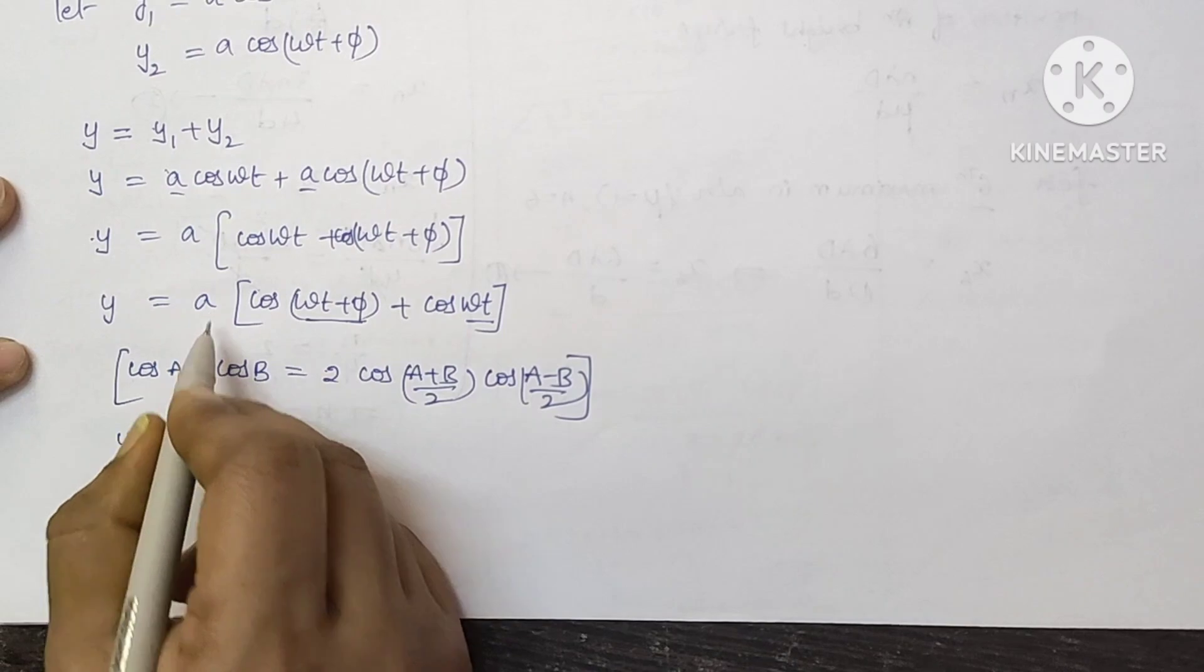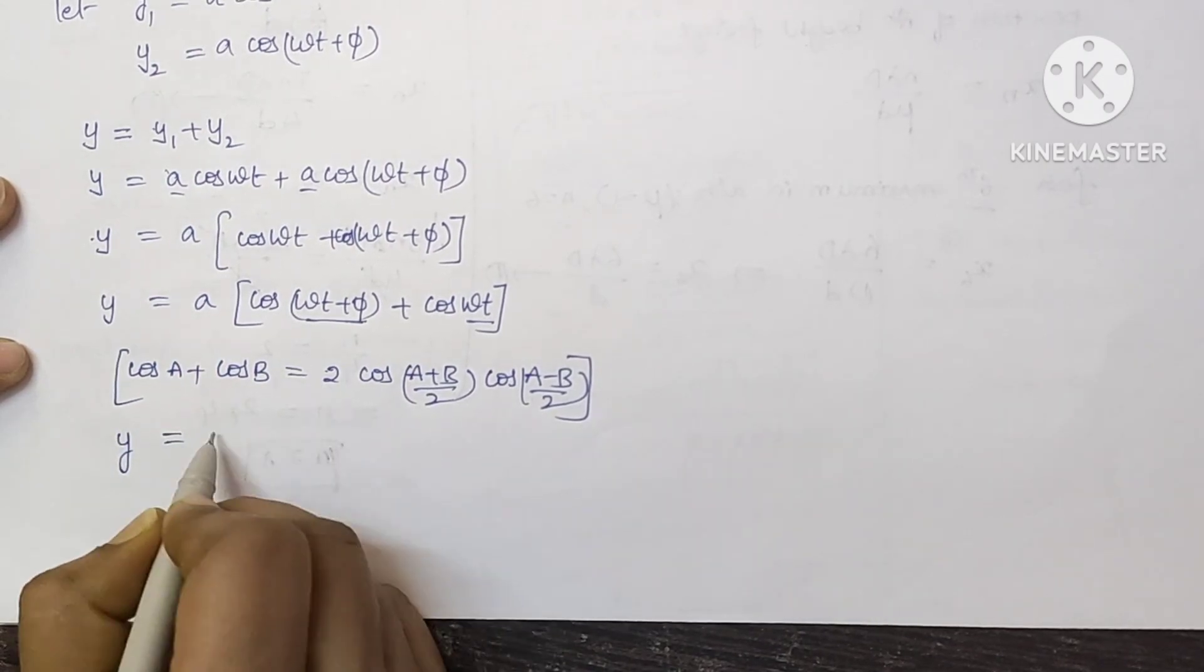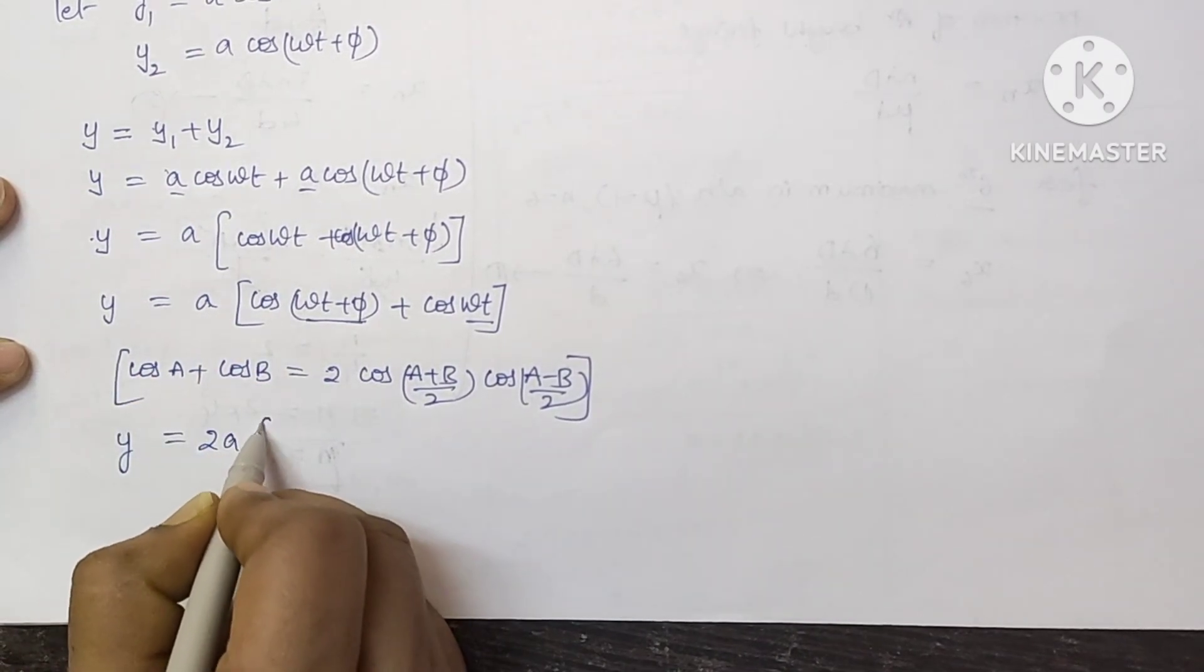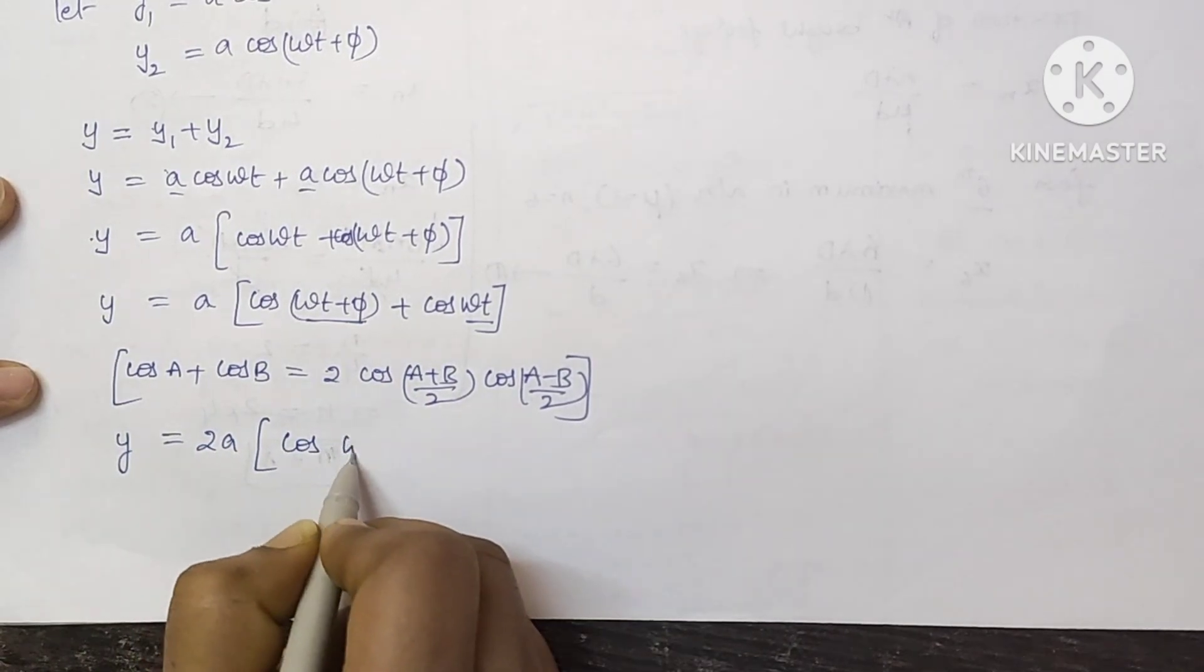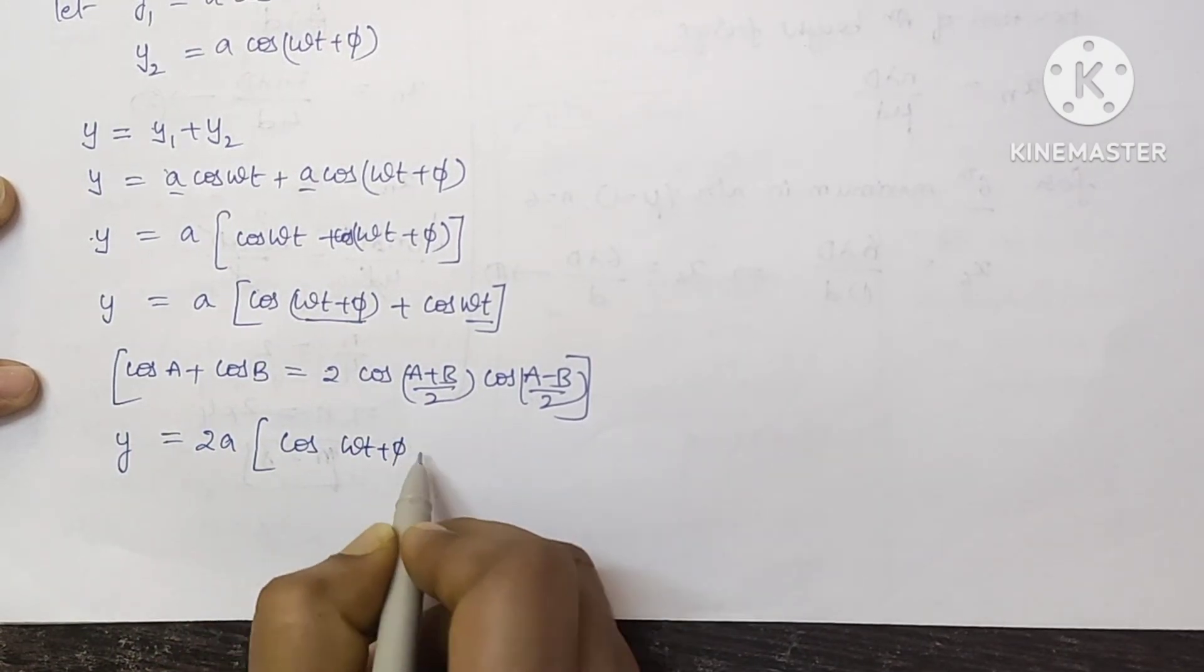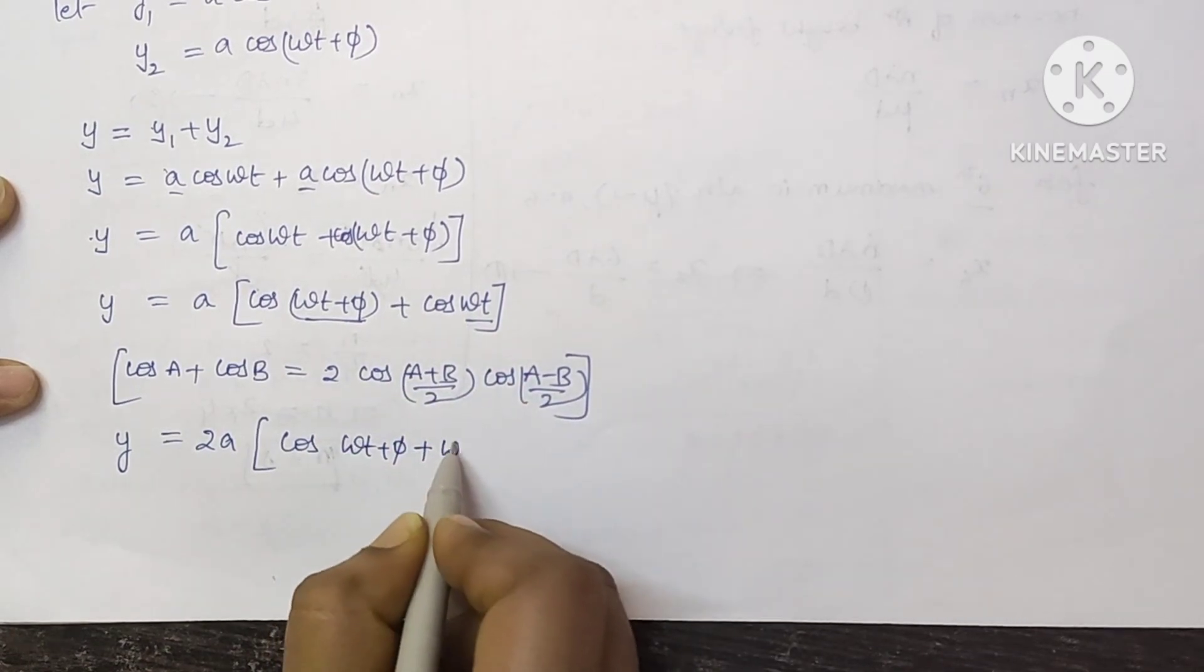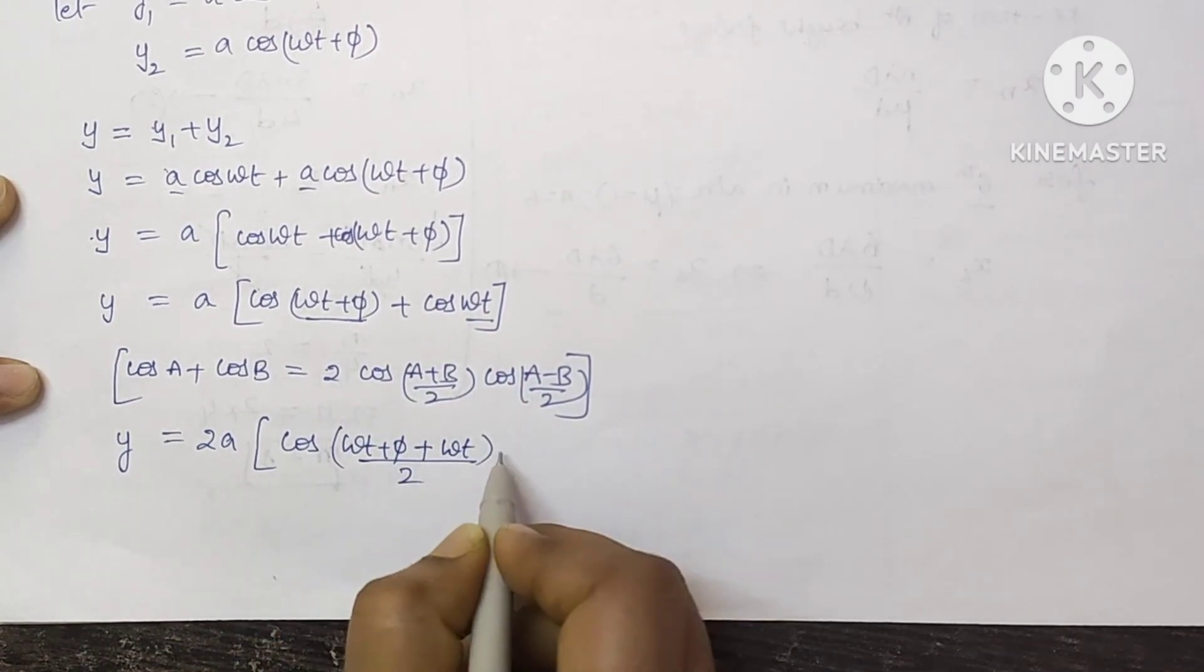So y is equal to, so here it is 2 and here A is there, into cos A plus B: omega t plus phi plus omega t whole divided by 2.